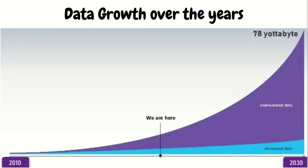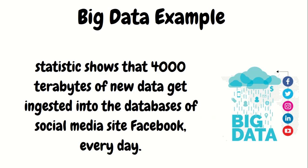Data is exponentially rising, as you can see in the graph. The graph also highlights keywords like unstructured data and structured data, which we'll discuss as well. The summary is: data is on the rise, exponentially.